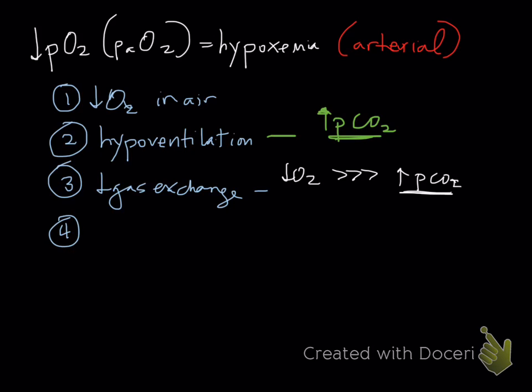And then the last one is something called a VQ mismatch, and this has to do with shunting of blood around alveoli, and we're really not going to talk about that at all. We'll talk very briefly about hypoxemia. We'll practice going over these cases in class, and there is a pretty thorough explanation that walks you through various blood gas cases in the workbook.